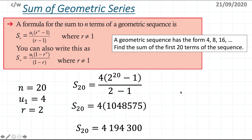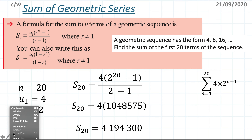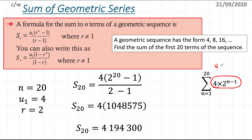It's useful to link this to sigma notation. I can rewrite this sum as the sum from n = 1 to 20 of 4 times 2 to the power of (n minus 1), which is the general geometric sequence formula u1 times r^(n-1). Substituting n = 1 gives the first term, n = 2 gives the second, and so on up to the 20th term — this is just a shorthand for adding all 20 terms together.